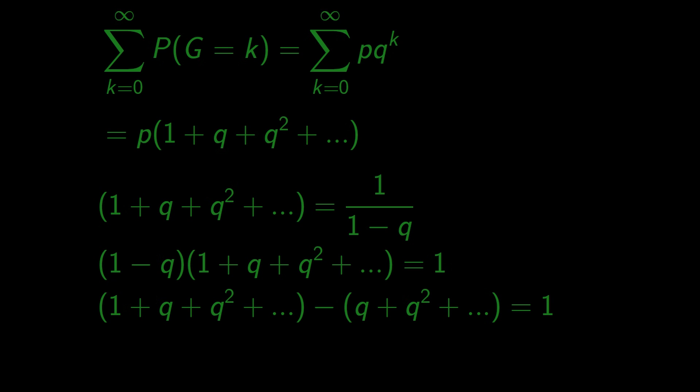So let's now substitute for the sum in our probability. 1 minus q is the same as p, which cancels out and we are left with 1. We are happy.